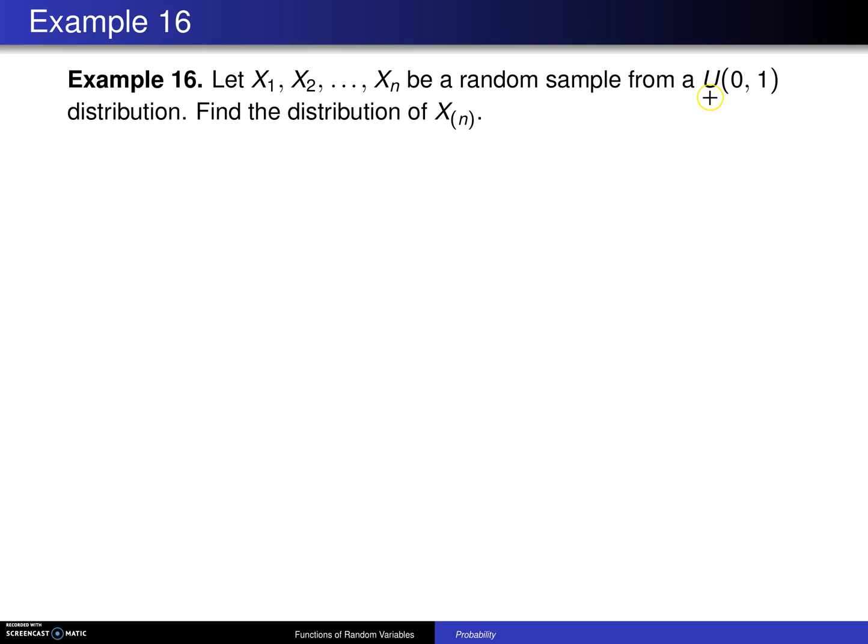The previous one had an exponential population. This one has a uniform population. The previous example wanted the smallest, and this wants the distribution of the largest.